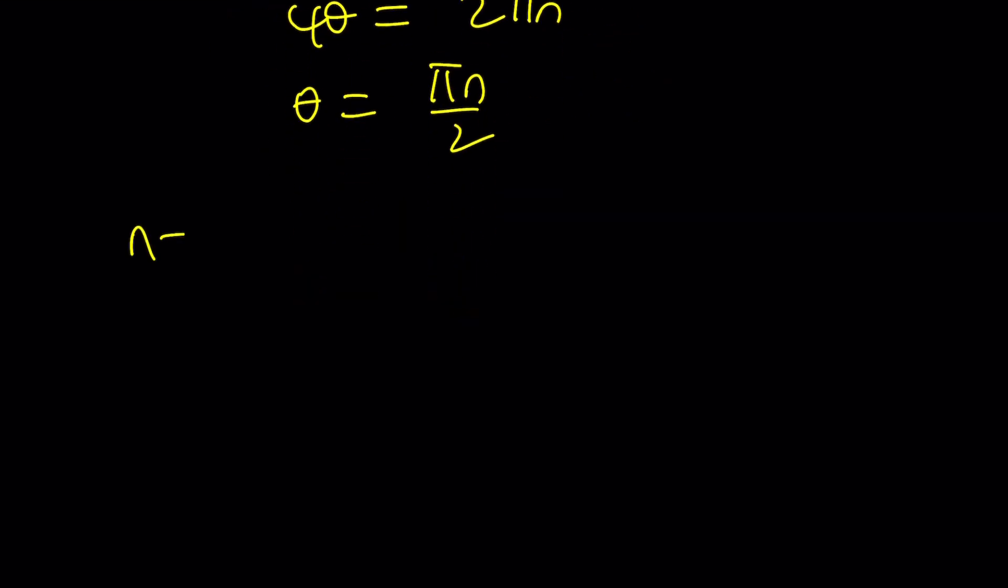And from here, you can basically get the following. If n is equal to 0, theta becomes 0. And r is 1, so z becomes 1. If n is equal to 1, theta becomes pi over 2, z equals i. And then you get z equals negative 1. And then you get z equals negative i. You basically go around the unit circle, hitting the corners.